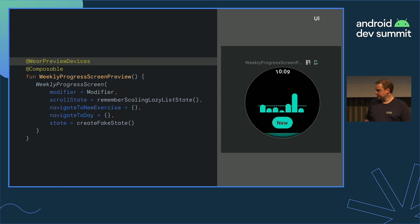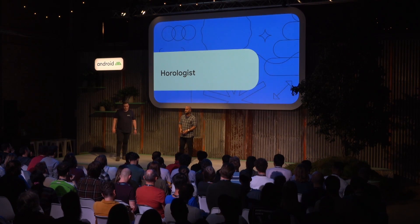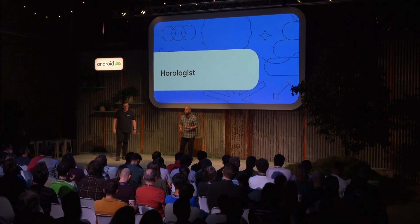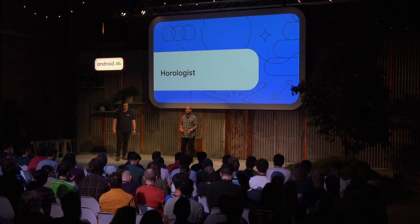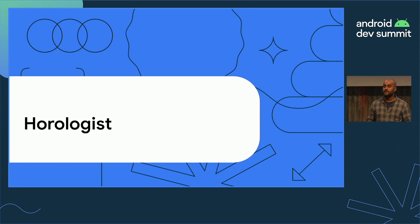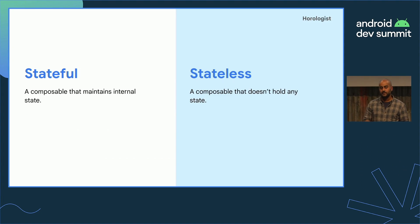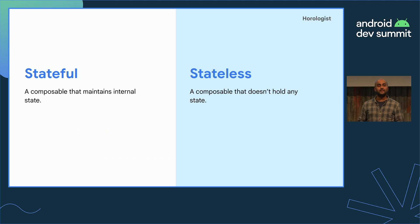Horologist is a group of libraries that makes it easier to develop for Wear OS. It has a toolkit for media, support for high-quality pre-built composables, and several tools that facilitate code reuse within your Wear apps, tiles, and complications. Even though tiles and complications don't use Compose, we can still apply the stateless principle using helpers from Horologist.